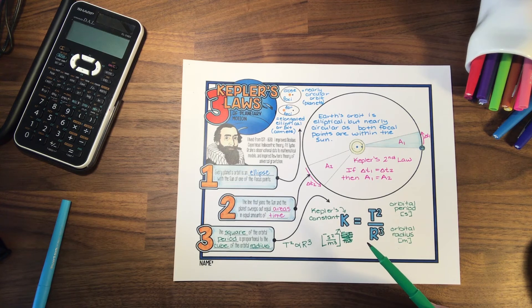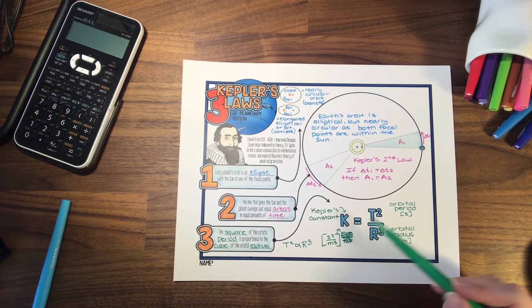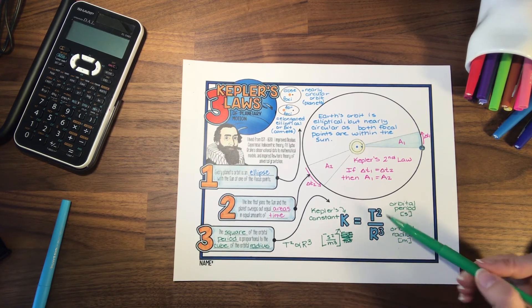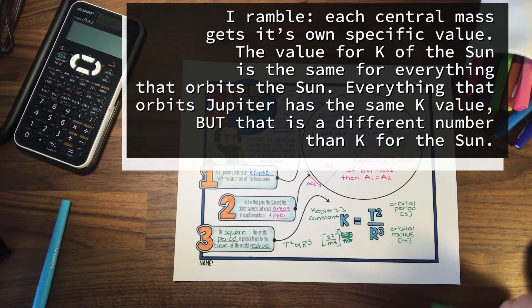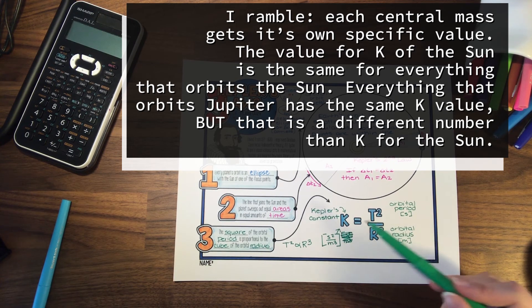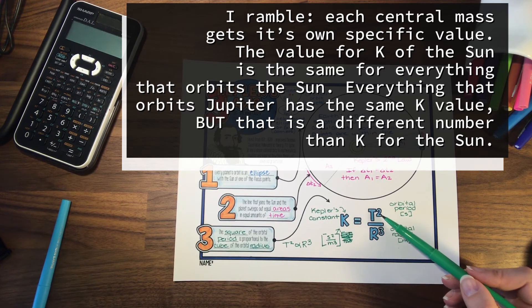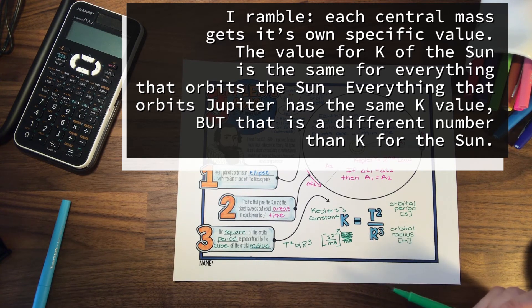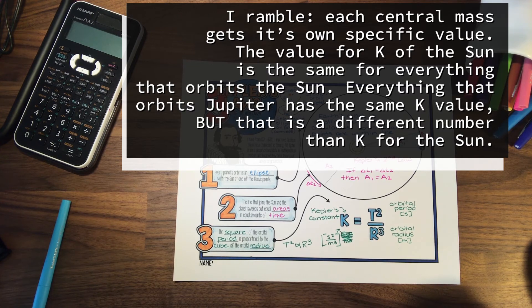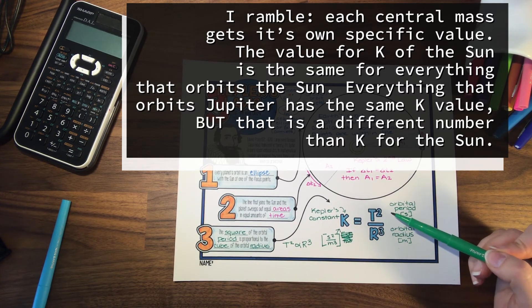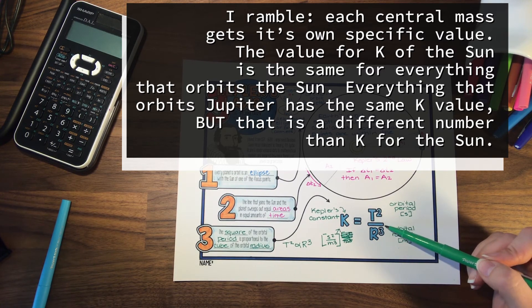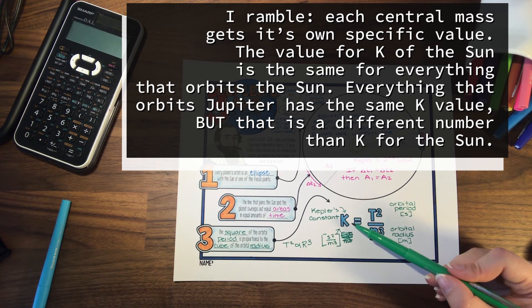This constant is true for each object orbiting a central body. For the Sun, the orbital period squared of Mercury divided by the cube of its orbital radius gives a value — Kepler's constant. We take the values for Venus, T² over r³, and get the same value. For Earth, its orbital period squared divided by its orbital radius cubed gives that exact same value. Every planet orbiting the Sun gives the same Kepler's constant.